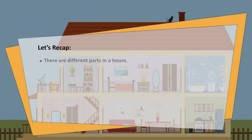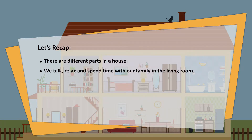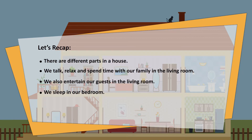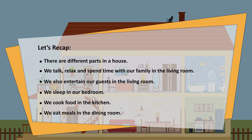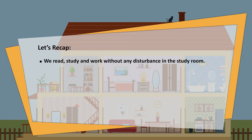Now let's recap. There are different parts in a house. We talk, relax, and spend time with our family in the living room. We also entertain our guests in the living room. We sleep in our bedroom. We cook food in the kitchen. We eat meals in the dining room. We read, study, and work without any disturbance in the study room. We take a bath in the bathroom.